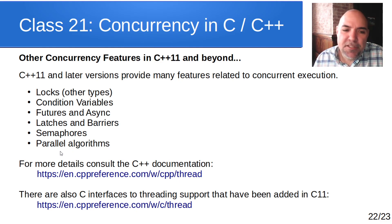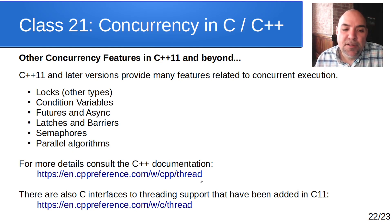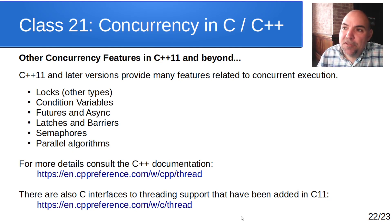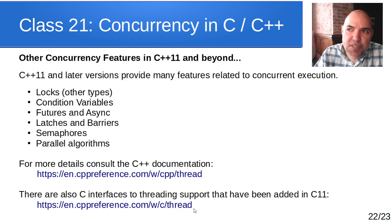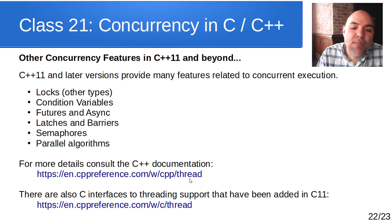Since we've covered the basic concepts of semaphores, barriers, futures, and async in Python, it works the same way in C++11 — just using C++ objects and class instances. I'll refer you to cppreference.com for more detail. There are also C11 interfaces to threading support for non-object-oriented, procedural C programming — that becomes very similar to how pthreads works but built into the language standard.